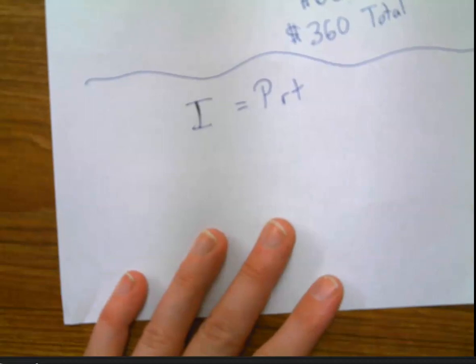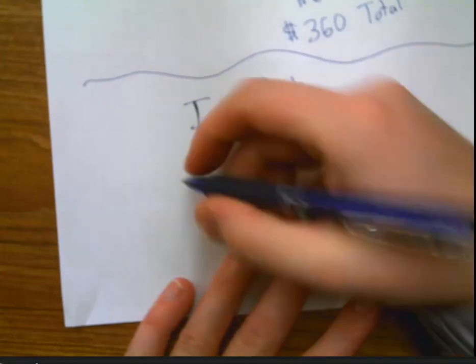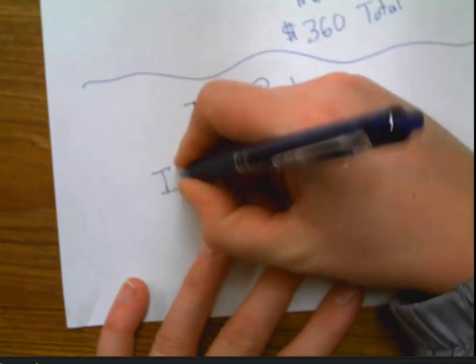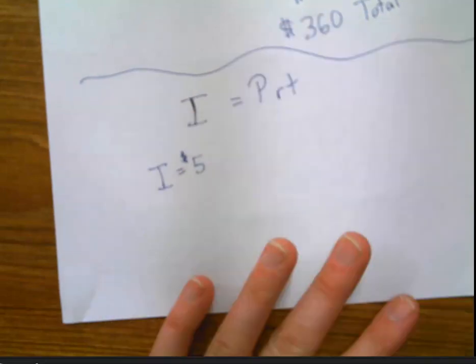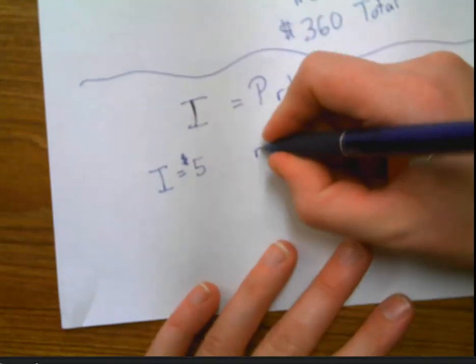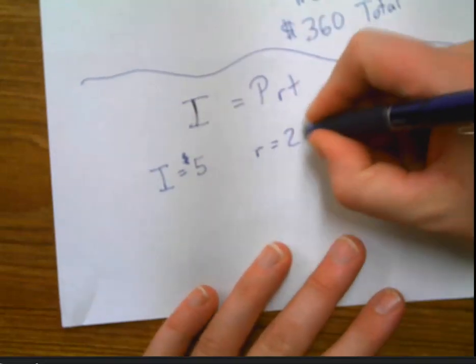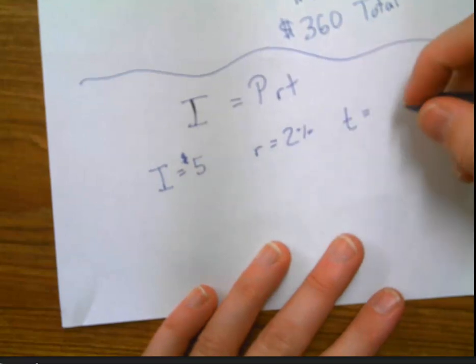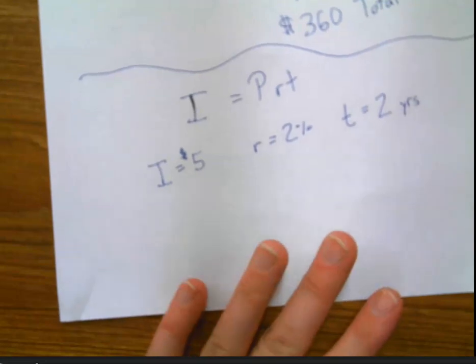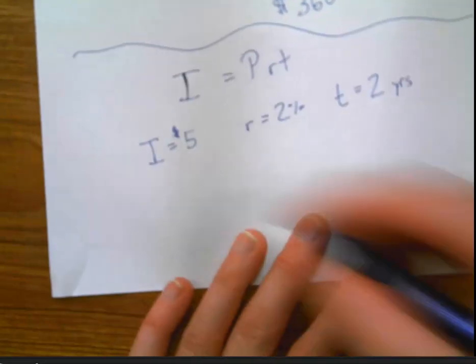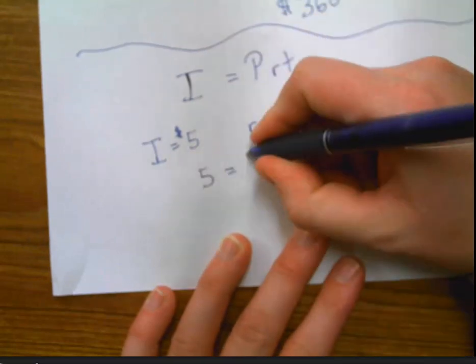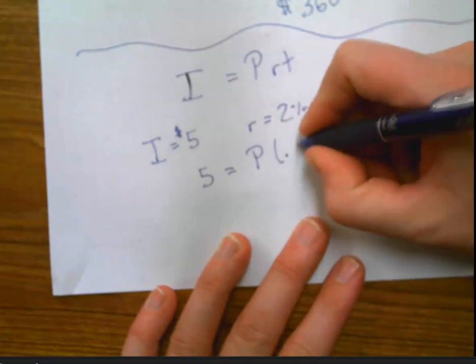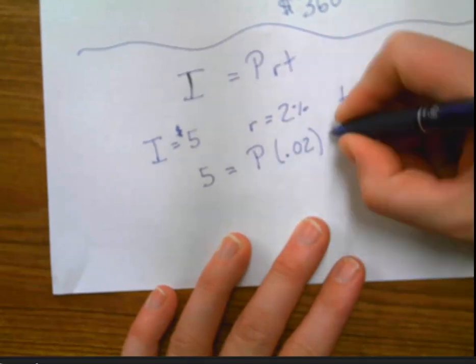The process is the same for all of them. So let's say that the interest I paid is $5, $5 interest. And the rate was 2%, and the time was two years. How much was my principal? Well, then I just substitute things in. I say five equals, we don't know the principal. We know the rate was .02, and the time was two.